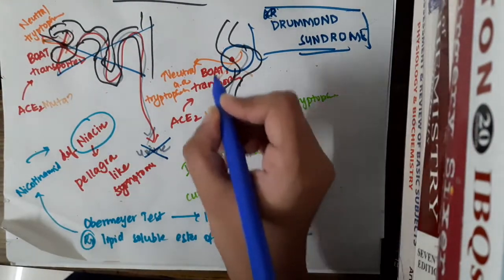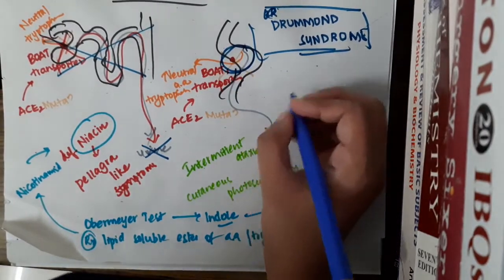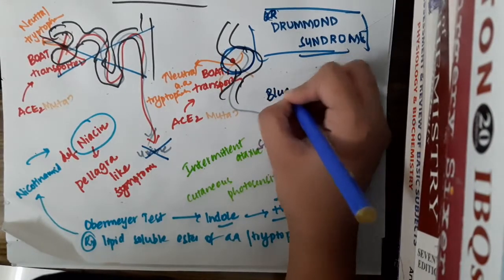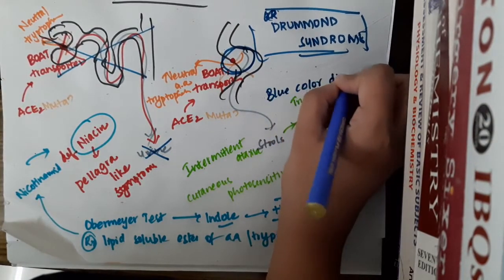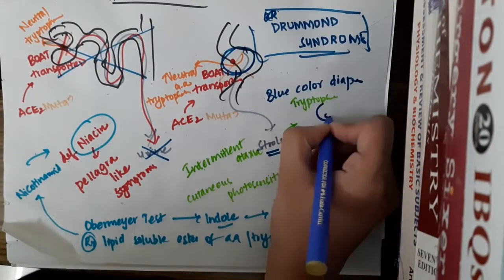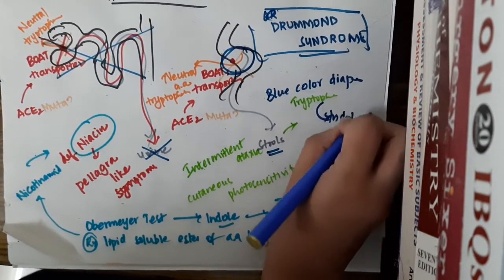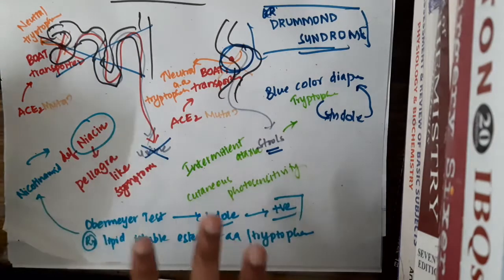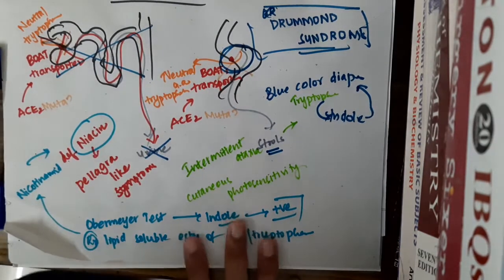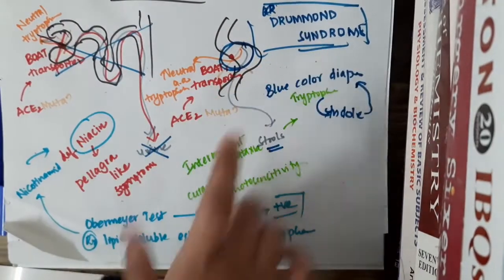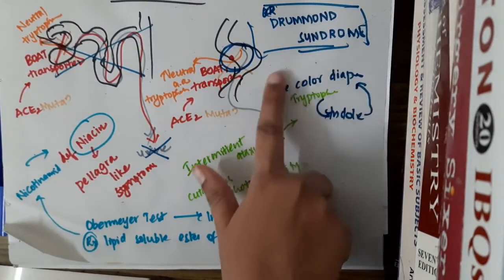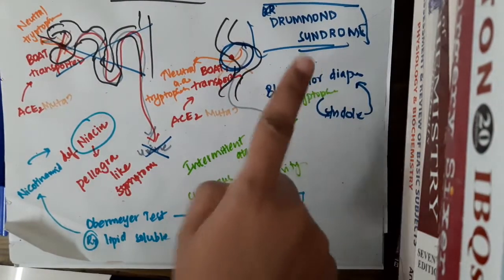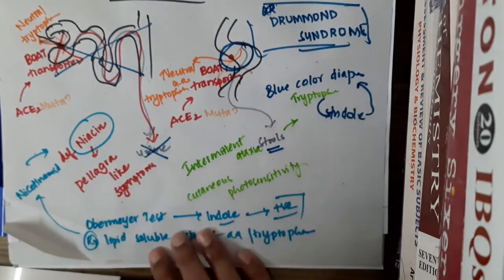In Drummond syndrome, there is malabsorption of tryptophan only in the intestine. So it has only one symptom: blue colored diaper, because tryptophan is excreted in the stools and gets converted to indole compounds. There is no aminoaciduria in the urine. This is why Drummond syndrome is also called blue diaper syndrome exclusively.